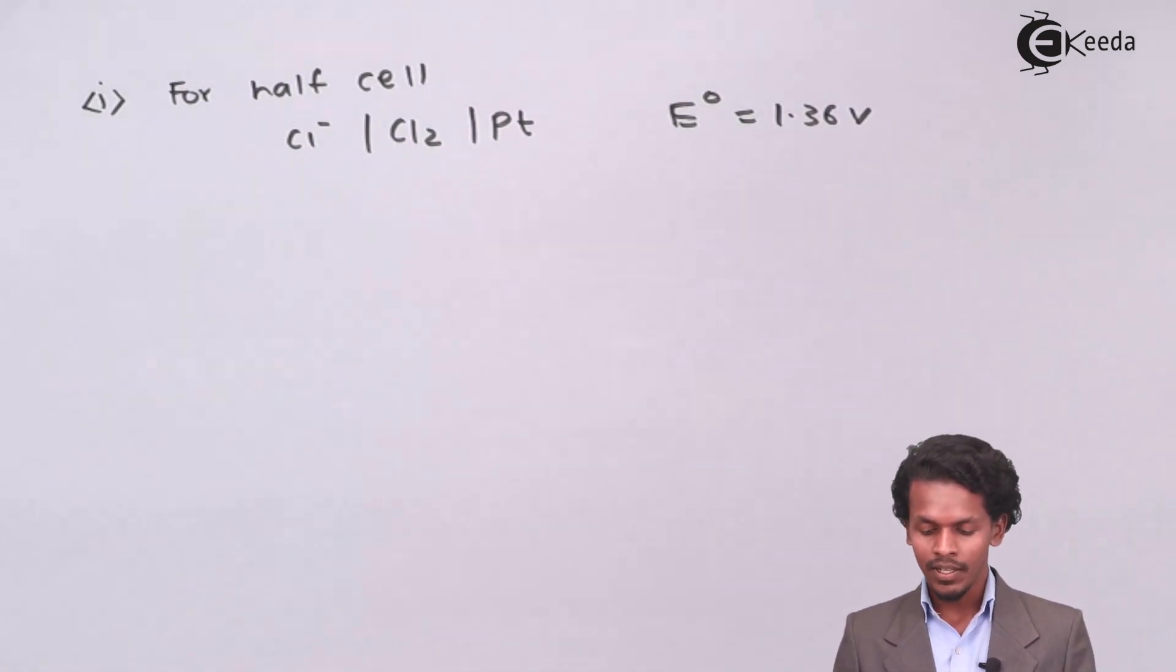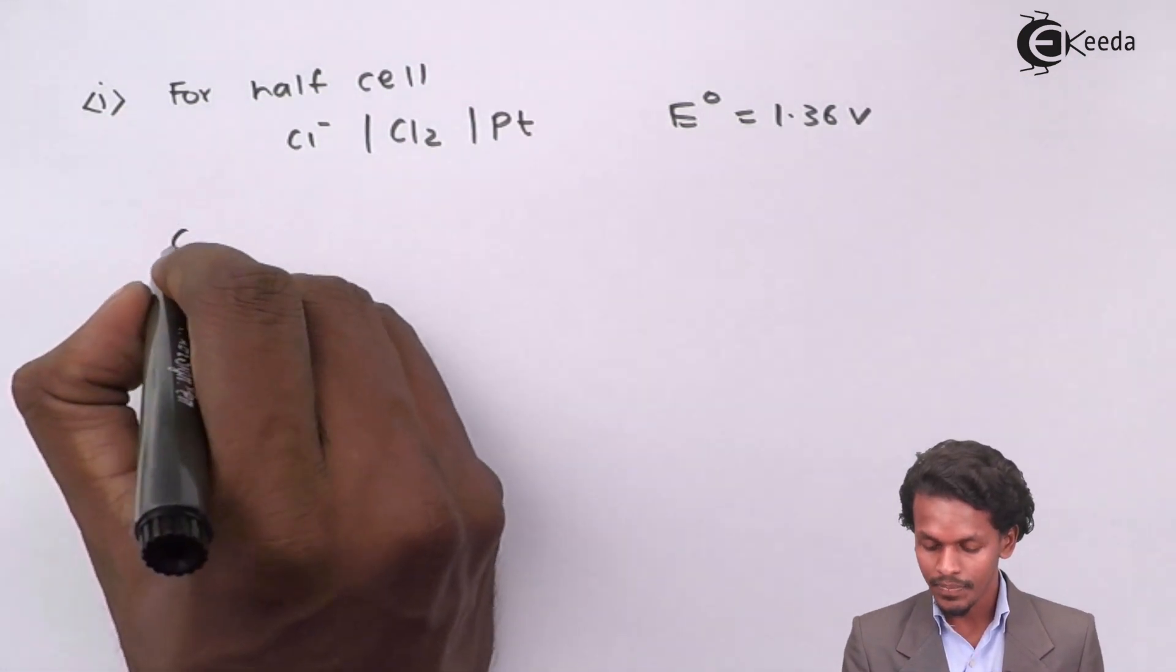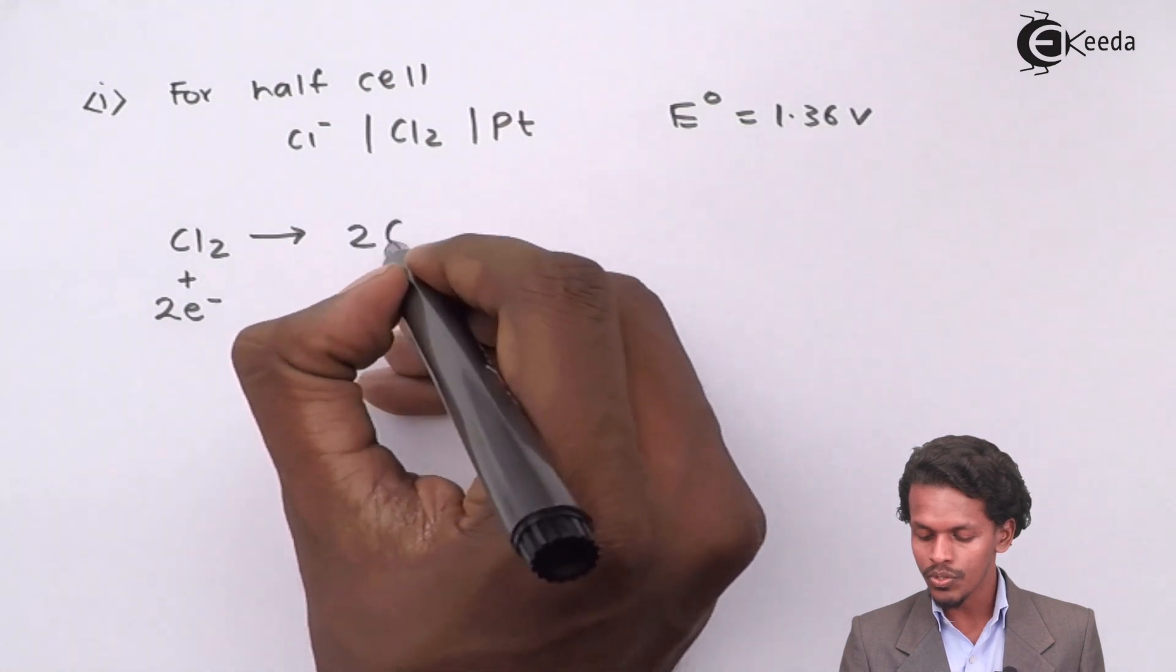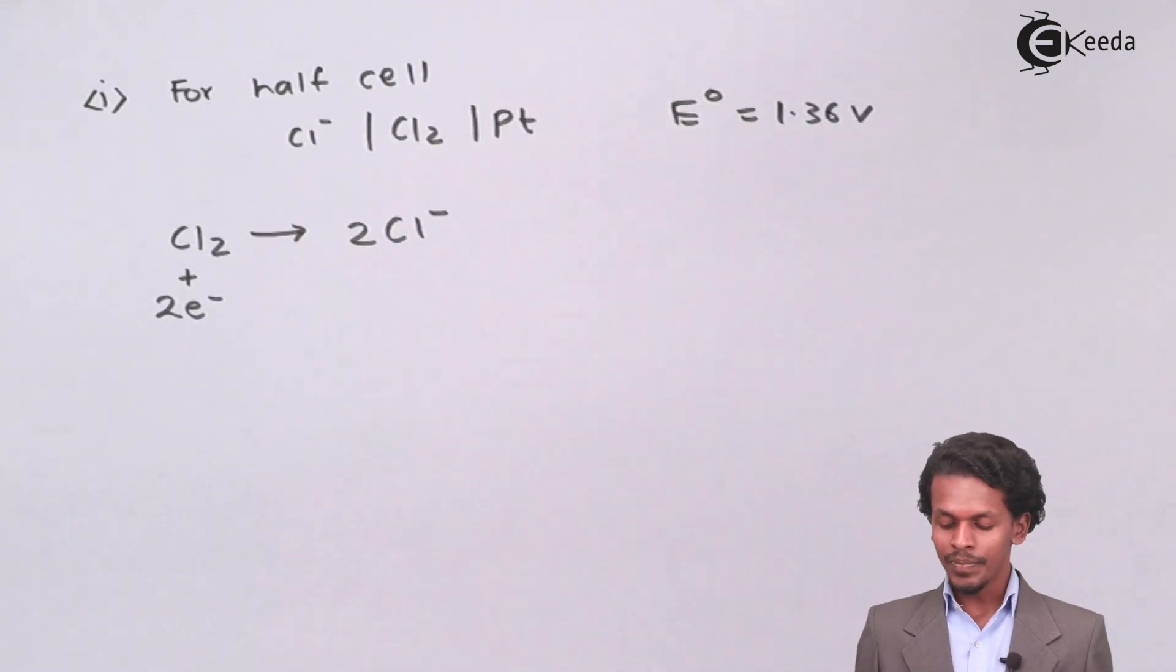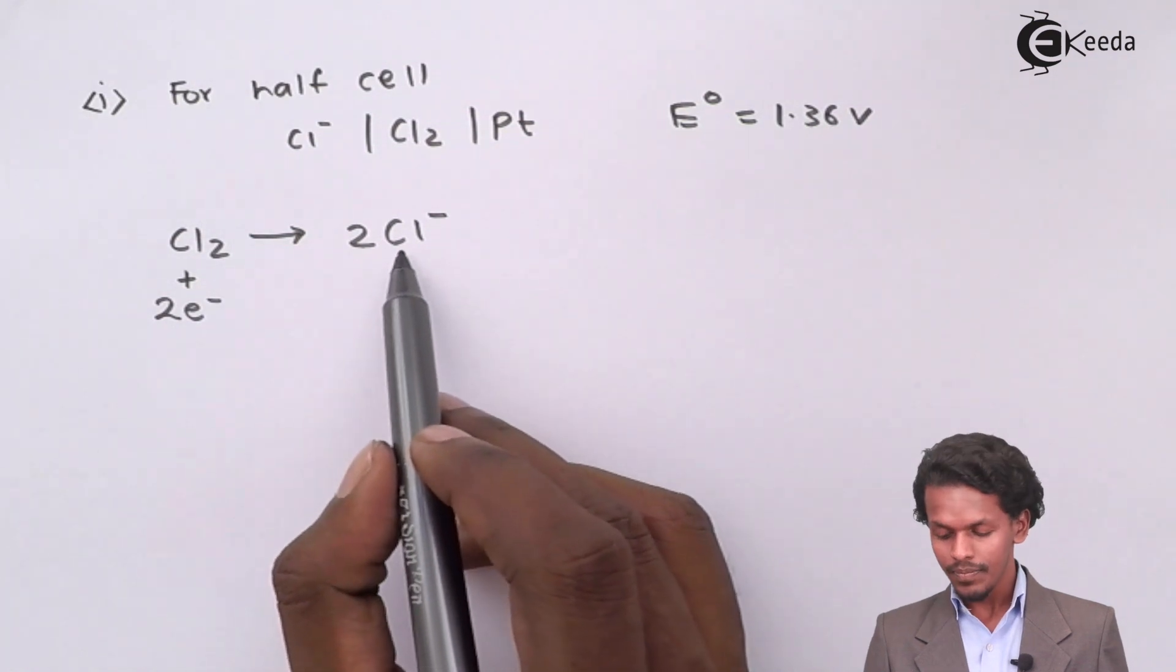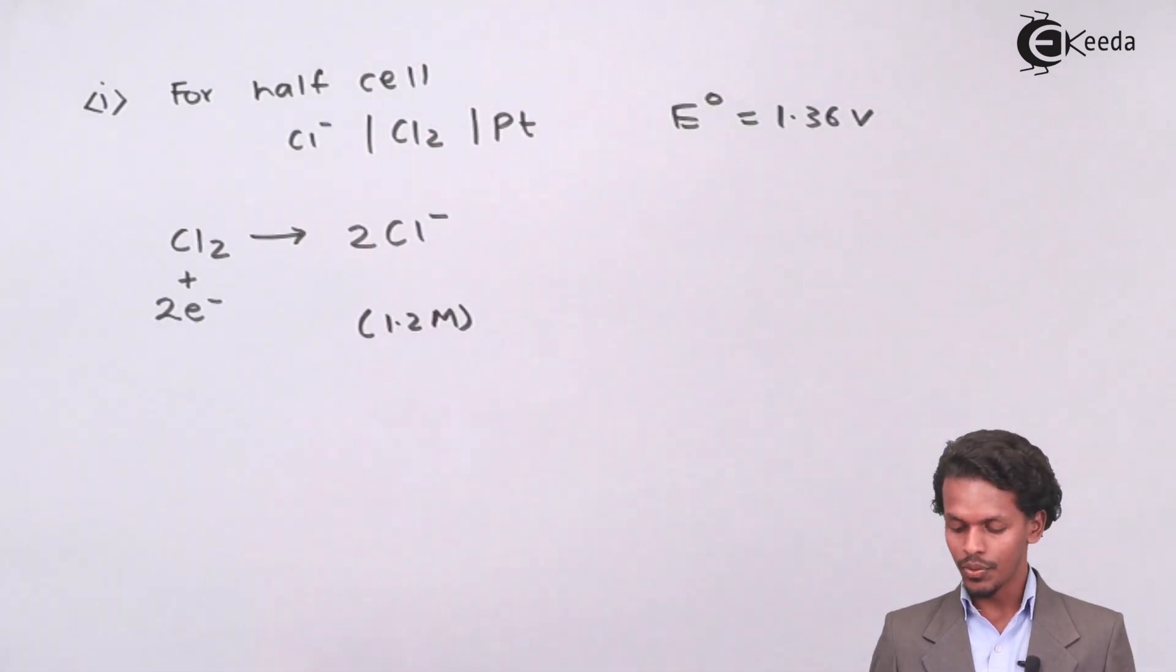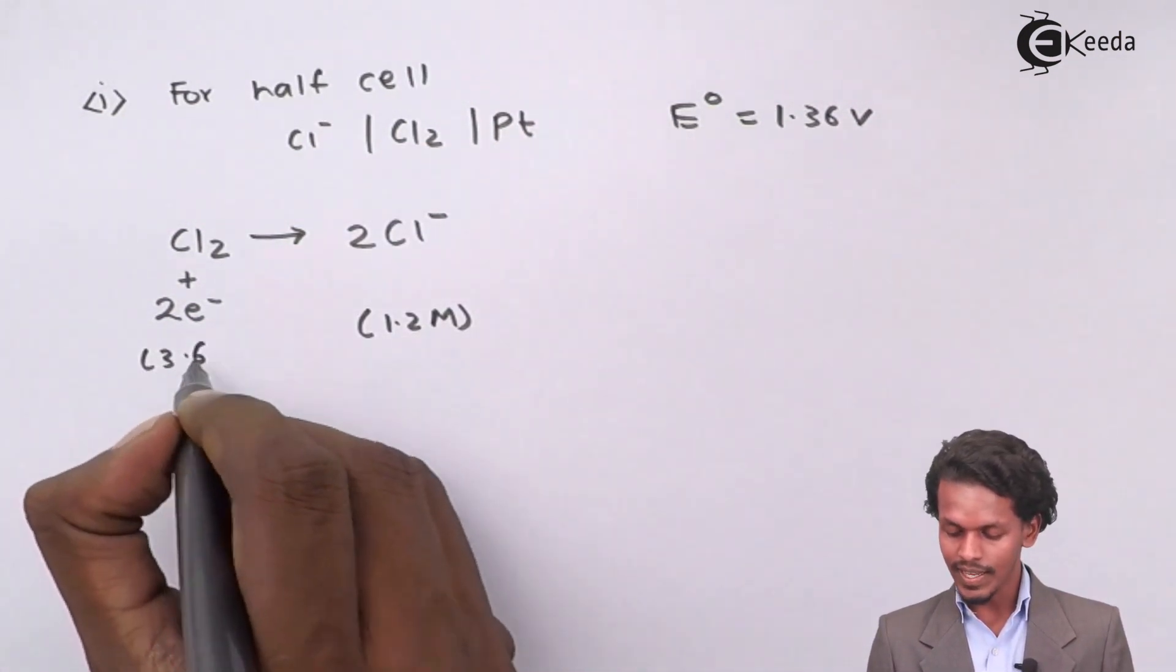When electrons are being accepted, for chlorine we could write it as Cl2 will accept two electrons to form two moles of Cl-. So it has been accepting electrons and hence showing a reduction process. The reactant is Cl2 while the product is Cl-. The Cl- has a concentration of 1.2 molar while Cl2 has a pressure of 3.6 atmosphere.